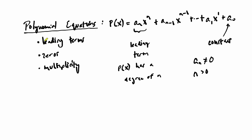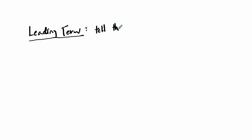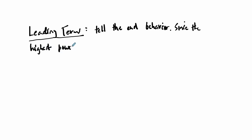So why do we care about leading terms? This leading term determines the shape of your graph. Leading terms tell you the shape and the end behavior of a graph. That's because the highest powers — the largest exponents — matter the most as x approaches positive or negative infinity.